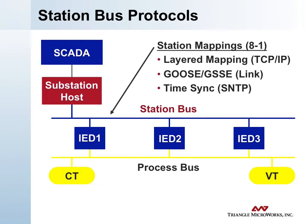The second is GOOSE — Generic Object-Oriented Substation Event and Generic Status Substation Event — which are link layer protocols used to do things like protection tripping and that sort of thing across the station bus.